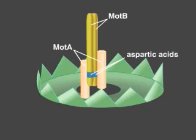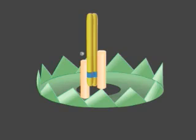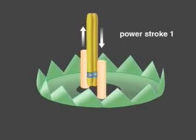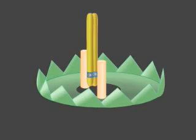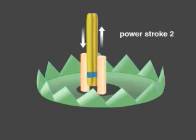Although the molecular mechanism of rotation is not known, one possible model describes protons moving through the channels in the stators and binding to the aspartic acid in the MotB proteins. This binding causes a conformational change in MotA proteins, resulting in the first power stroke that moves the rotor incrementally. At the end of the first power stroke, the two protons are released into the cytoplasm. The proton loss causes a second conformational change that drives the second power stroke, once again engaging the rotor.